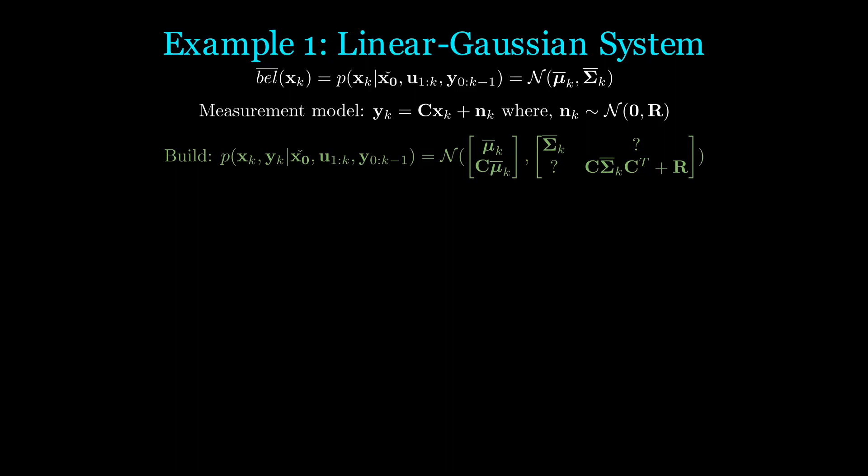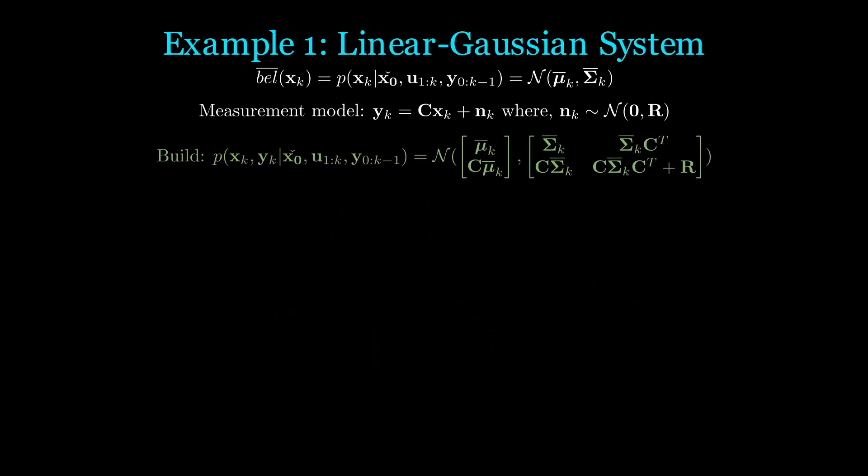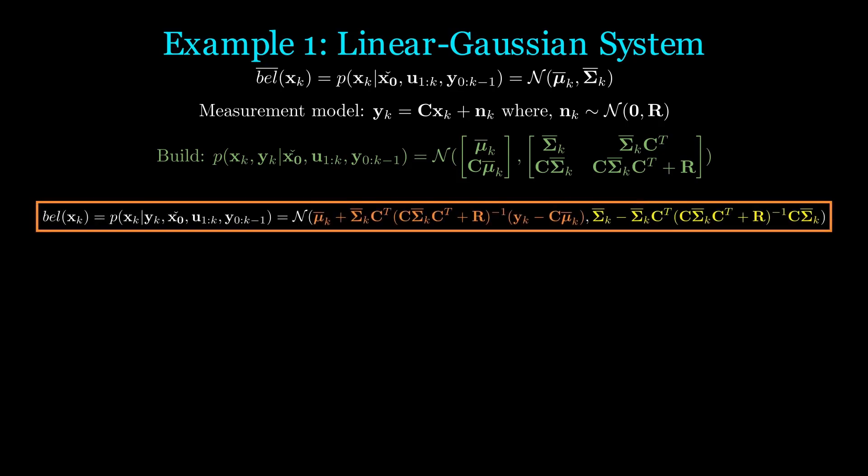The last piece of the puzzle is the cross covariance Σ_xy. Again, starting with definition, we plug in the appropriate values, group terms, and expand. We are left with Σ̄_kC^T. And know that Σ_yx is just the transpose, and that Σ̄_k is symmetric. Hence, with all this, we can directly write out what bel(X_k) is. And this is the same result we would get if we applied the Kalman filter equations.